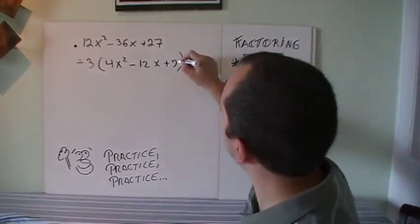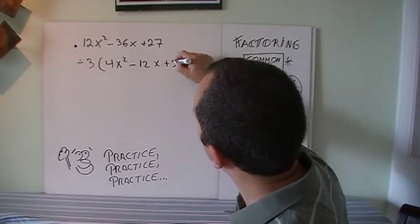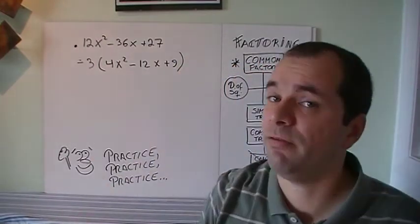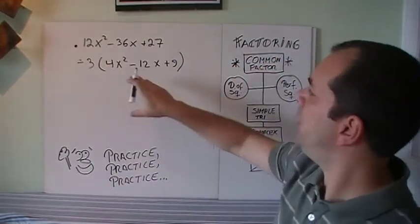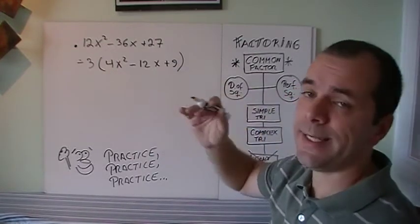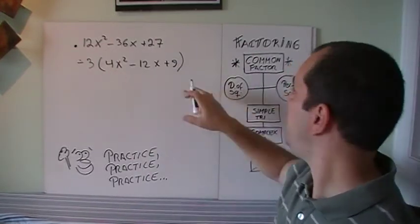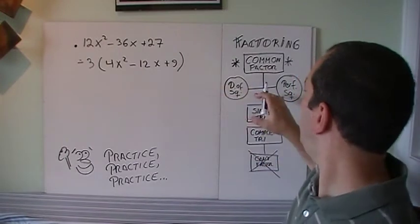Alright, so it looks like, let's check again, see if I missed the common factor. Is the common factor inside? No, 4, 12, 9, can't take a common factor. Could it be a difference of squares? No. Could it be a perfect square?